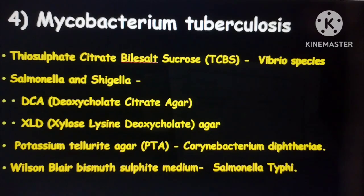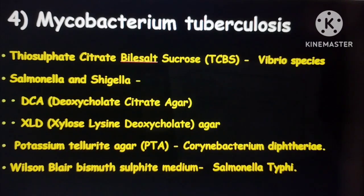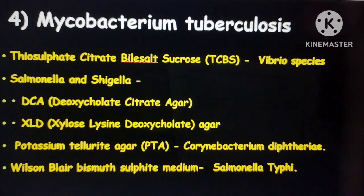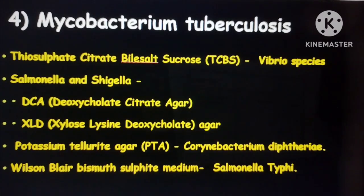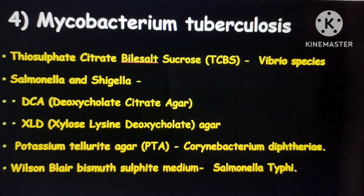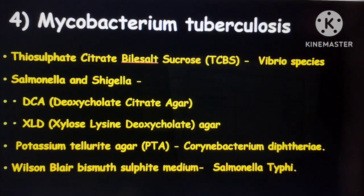For Salmonella and Shigella, the selective medium is deoxycholate agar and xylose lysine deoxycholate (XLD) agar. For Corynebacterium diphtheriae, it is potassium tellurite agar. Wilson-Blair medium is used for Salmonella typhi, and it usually produces jet black colonies.